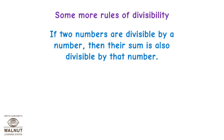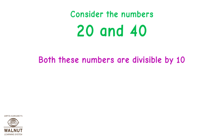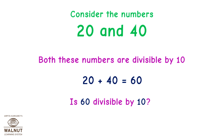Some more rules of divisibility: if two numbers are divisible by a number, then their sum is also divisible by that number. Let's see how that works. Consider the numbers 20 and 40. Both are divisible by 10. 20 + 40 = 60. Is 60 divisible by 10? Yes.